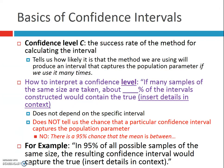Lots of very important information here — highlight this, put a box around it. The confidence level is the success rate of the method for calculating the interval. It tells us how likely it is that the method we're using will produce an interval that captures the population parameter if we were to use that method many times.